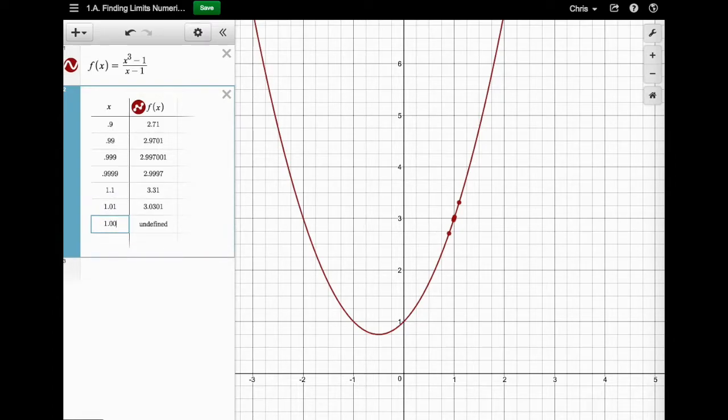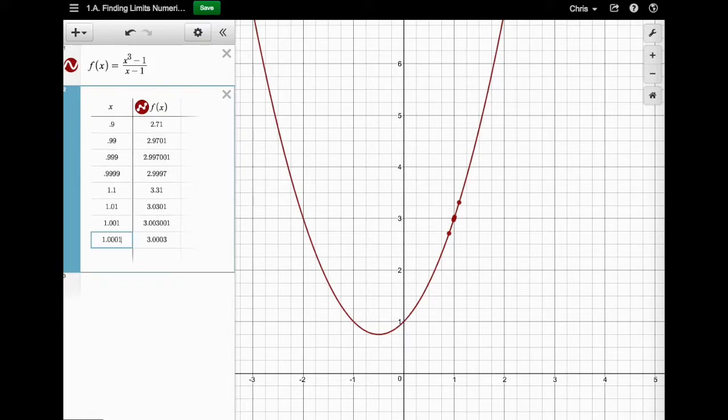And again, it's getting closer and closer to that three. It's getting closer and closer to this three right here for the Y. And then I'm going to do one more, 1.0001. So the trend is getting closer to three here. So you can deduce that your estimate for this limit,